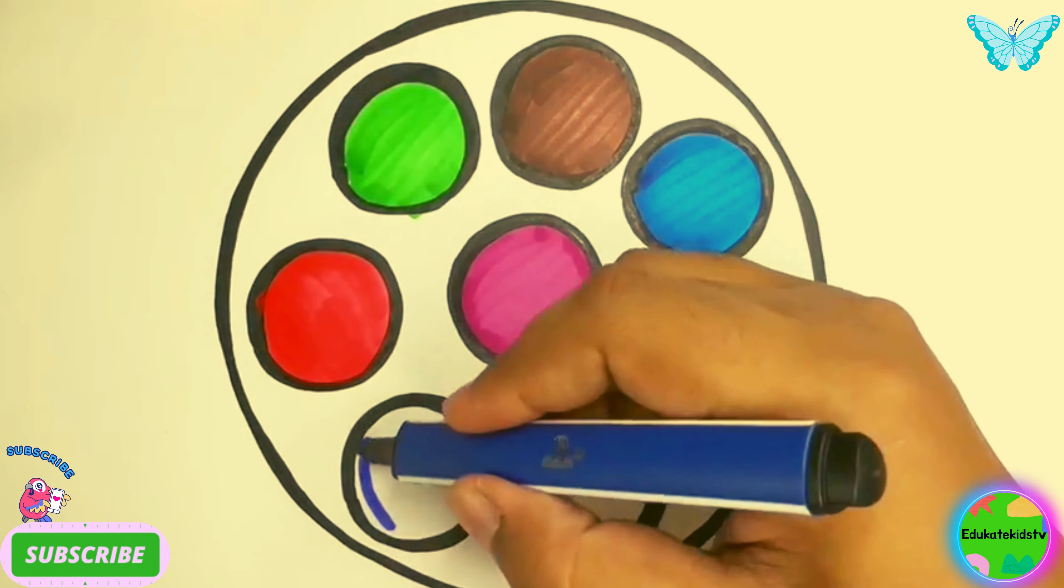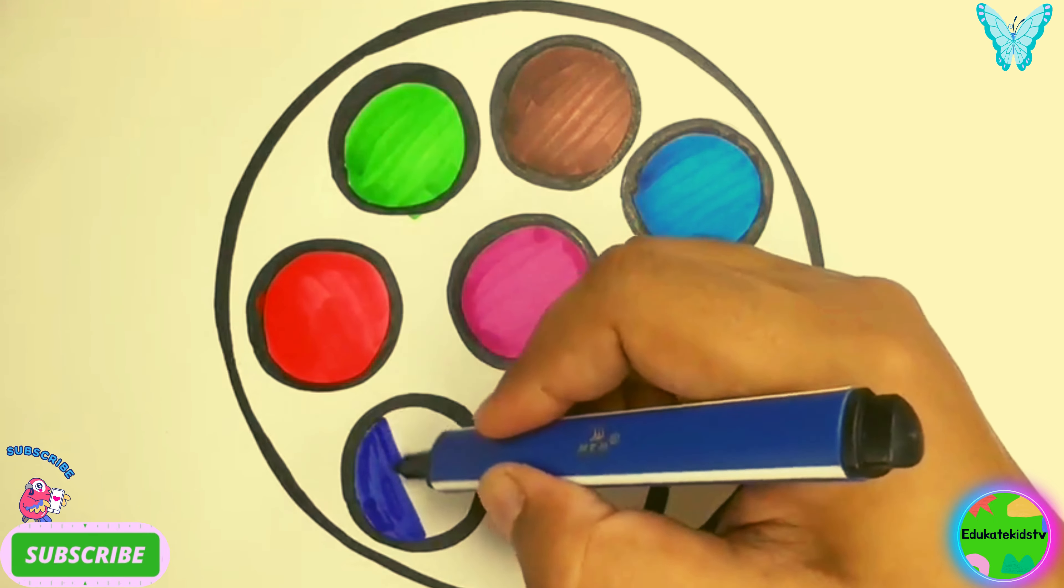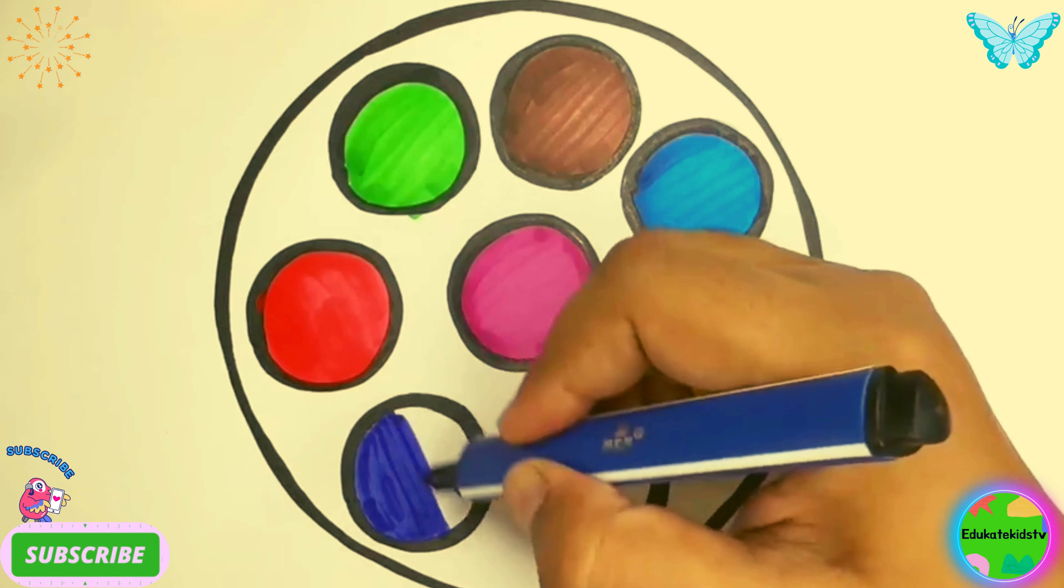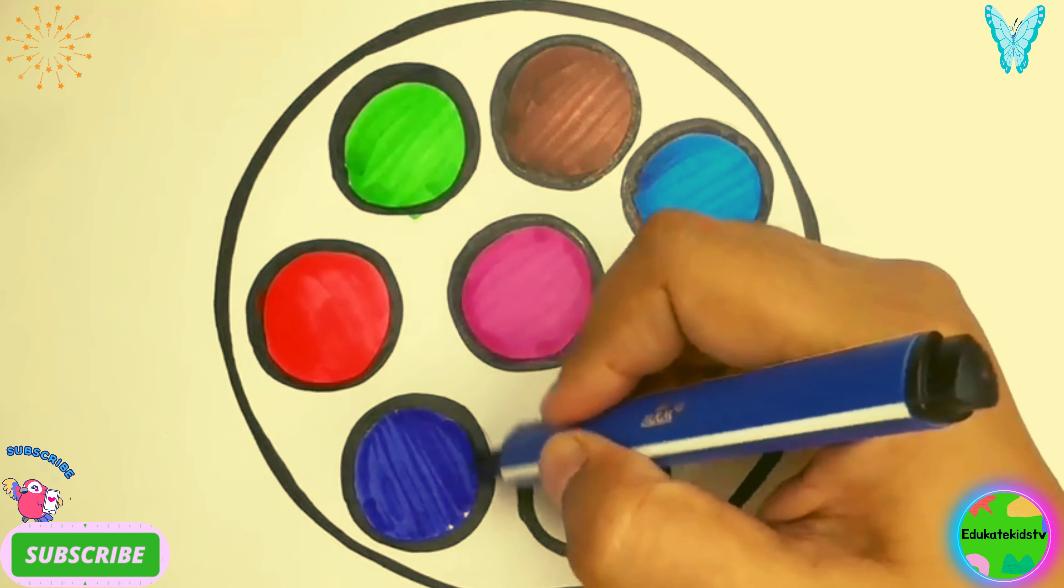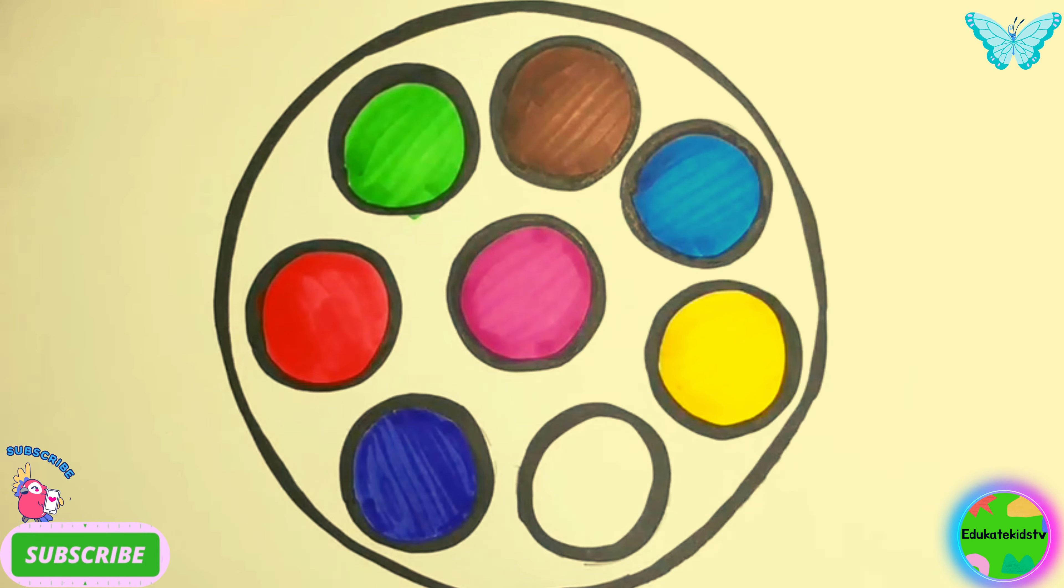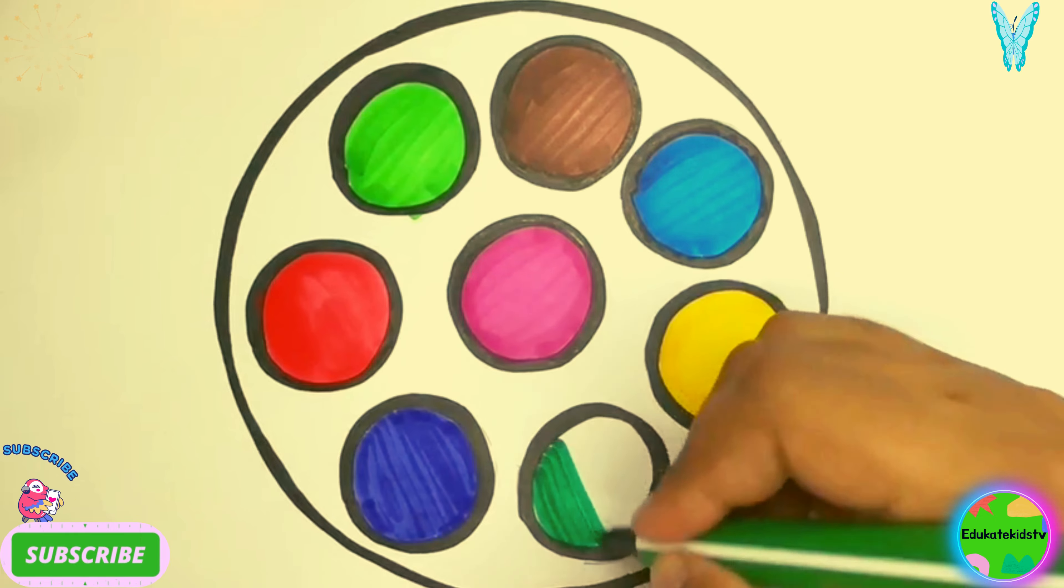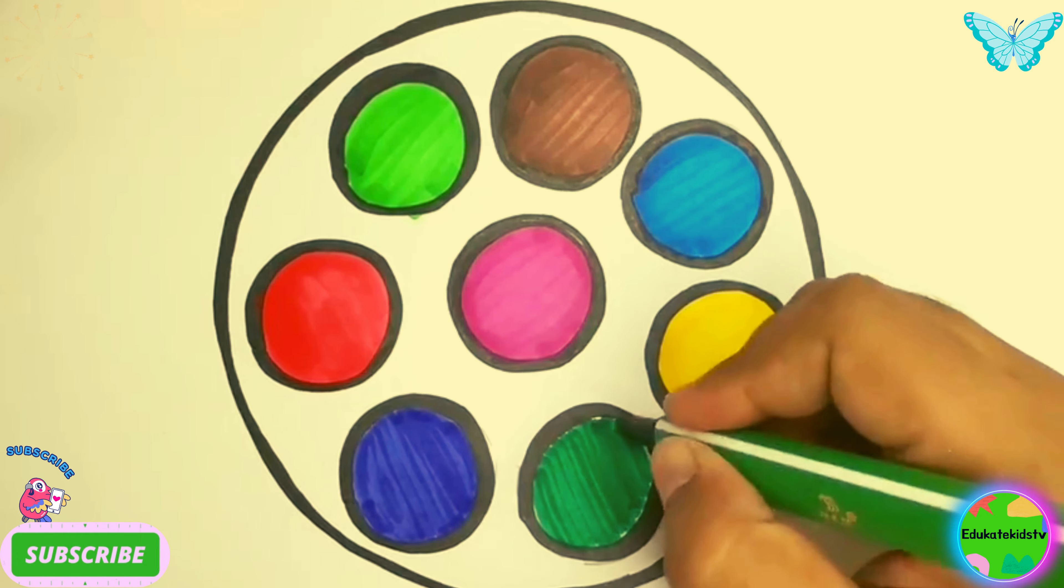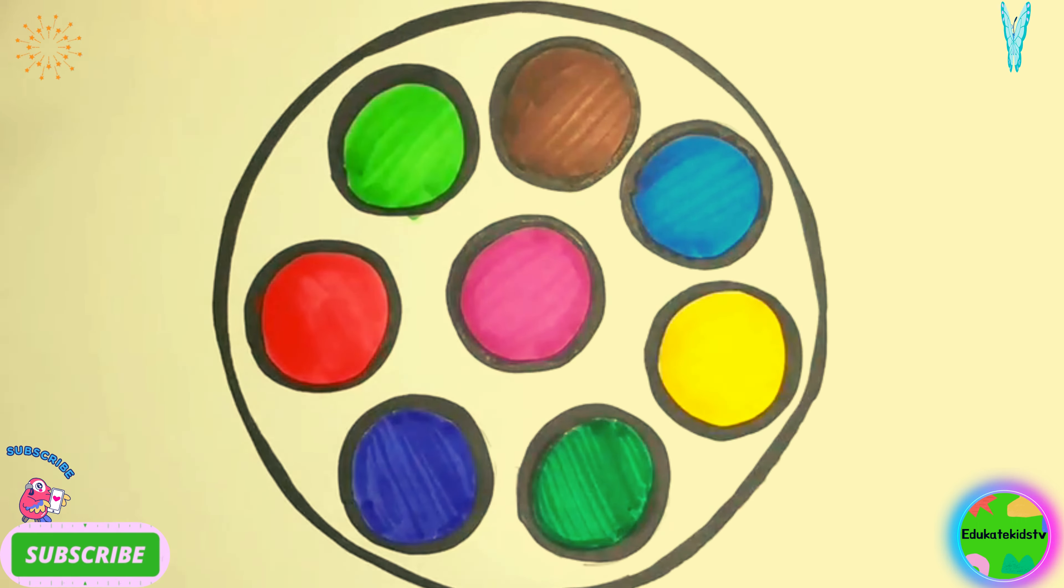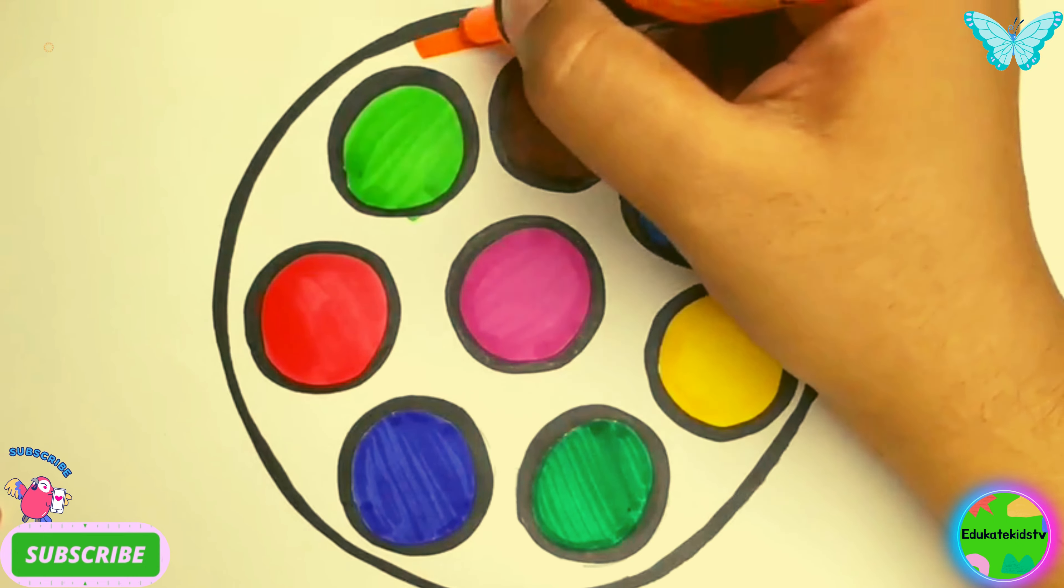Blue color, dark blue color, dark green color, dark blue color. Now I'm going to color the base of the circle orange.